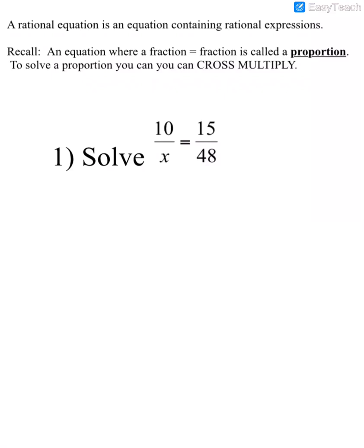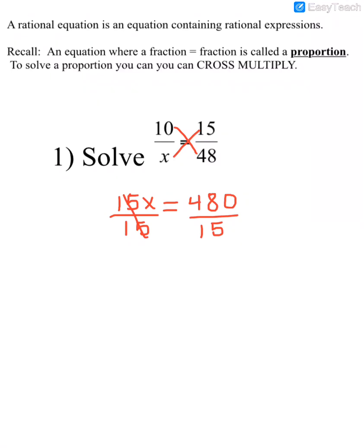We can solve a proportion by cross-multiplying. It doesn't matter which crisscross you do first — you can multiply x times 15 first, or 10 times 48 first. If I multiply x times 15, I get 15x equals 10 times 48, so that's 480. Then to solve this, I divide both sides by 15 and get x equals 32.